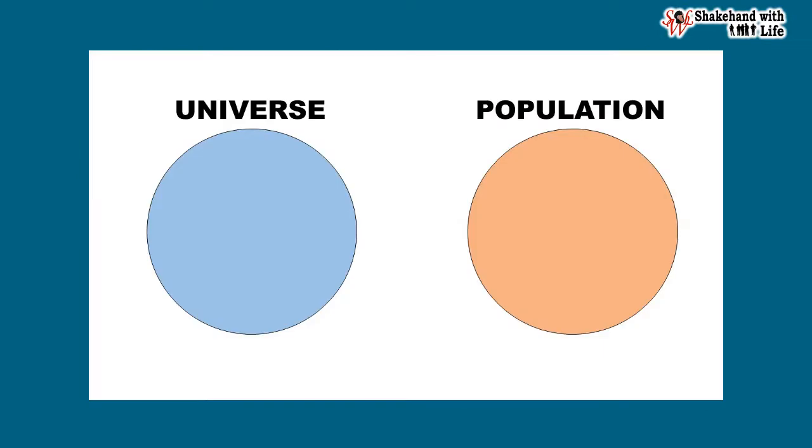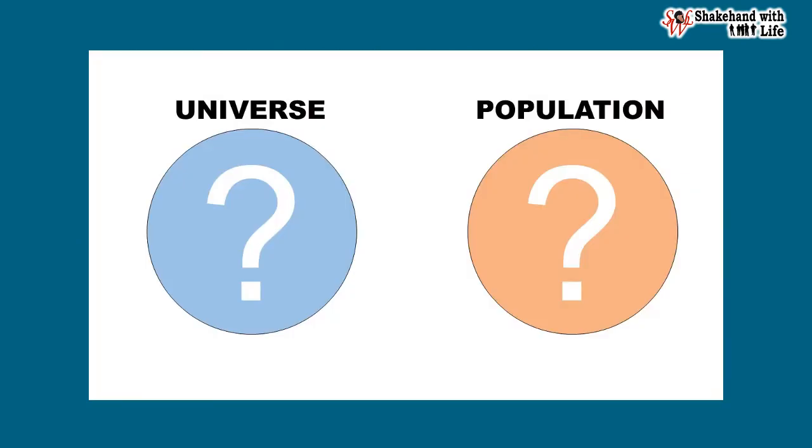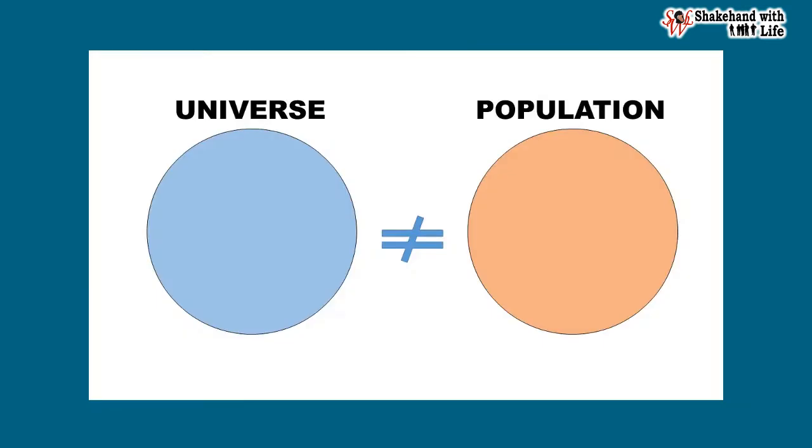Universe and population are two very common terms. Even though the two terms are considered the same and used interchangeably, both should be clearly understood in context of statistics and research — such as how the universe is defined and how the population is defined, how the two terms differ from each other, and for which case the population is said to be the universe.